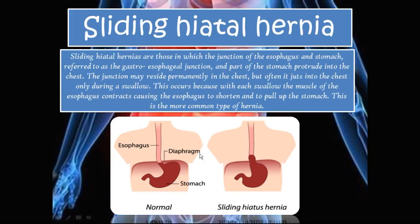Looking at the diagram, you can see the normal anatomy with all organs in their correct places. In a sliding hiatal hernia, the gastroesophageal junction — where the color changes from esophagus to stomach — is in the incorrect position. Normally it sits below the diaphragm, but in a sliding hernia it slides up into the thoracic cavity, bringing a portion of the stomach along with it.